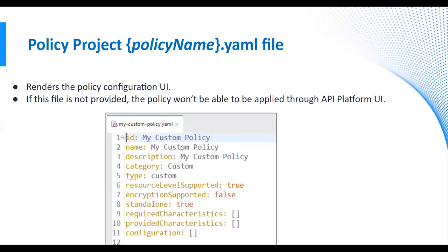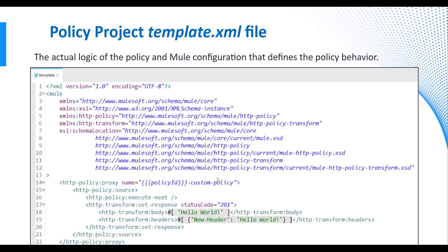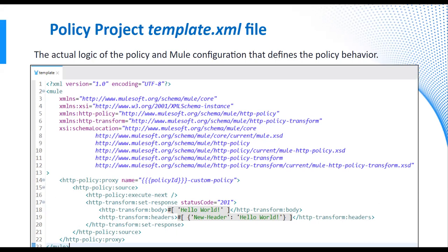The YAML file is responsible for rendering your policy configuration in API Manager. So whenever you open API Manager and start applying that policy, you see some properties over there. With the default project, we won't be able to see any properties. The second file is template.xml — here we'll be writing our business logic.